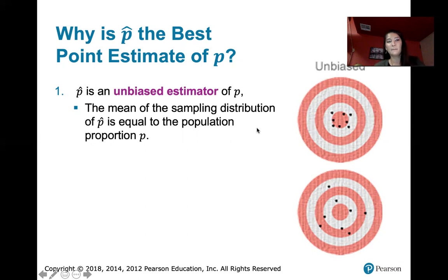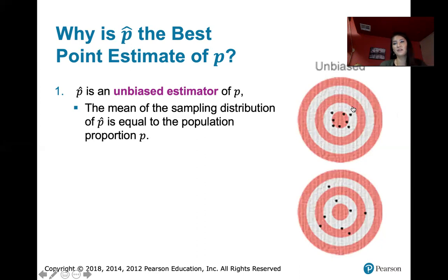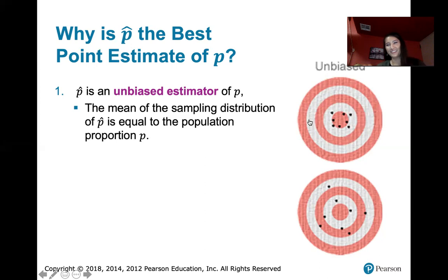When we say that p̂ is an unbiased estimator of P, we're not saying that p̂ equals P. What we're saying is, if we keep computing p̂ for many samples all of the same size and look at the mean of those, the average would be directly in the center of our target. The mean for an unbiased estimator is exactly what we want it to be — in this case, the population proportion P. We say that p̂ targets P.